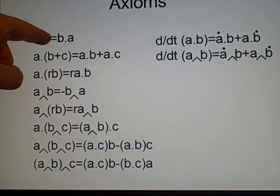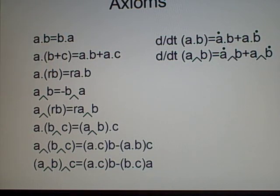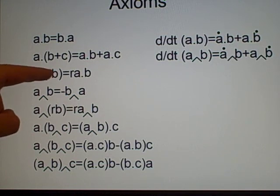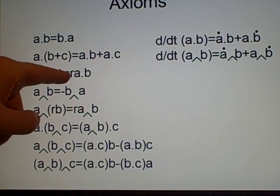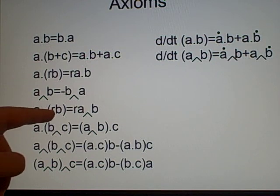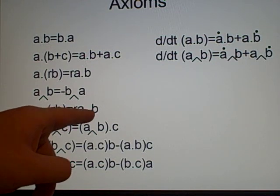Axioms. a dot b is b dot a. Now, all of these a, b, and c in this should have lines underneath, because they're all vectors, but I couldn't be bothered. And r is a scalar. So that's just, we're just multiplying there. So a dot b is b dot a. a dot (b plus c) is a dot b plus a dot c. a dot rb, where r is a scalar, is the same as ra dot b. a cross b equals minus b cross a. a cross rb is ra cross b.